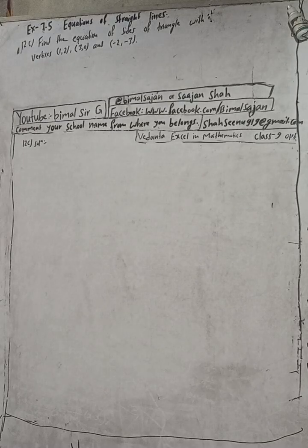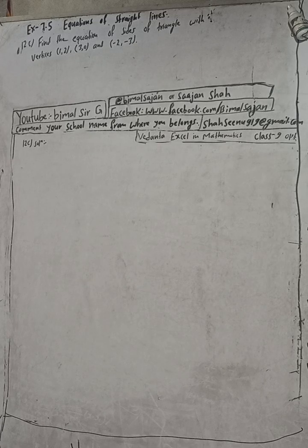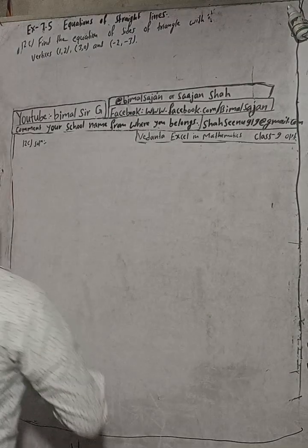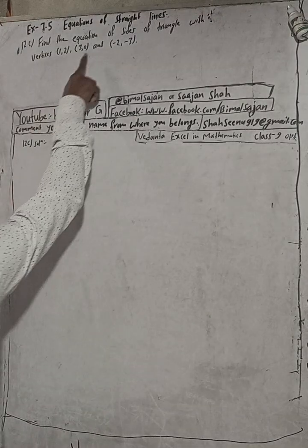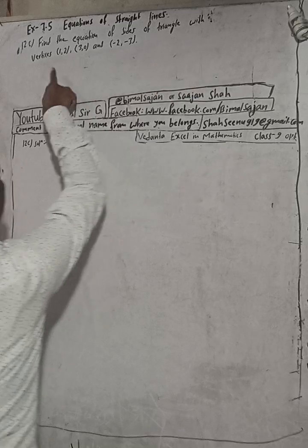Hi class 9 and 10 students, welcome back to Bimal Sir's YouTube channel. This is question number 12c, exercise 7.5, equations of straight lines, class 9 optional mathematics. Here is the question: find the equation of sides of a triangle with vertices.